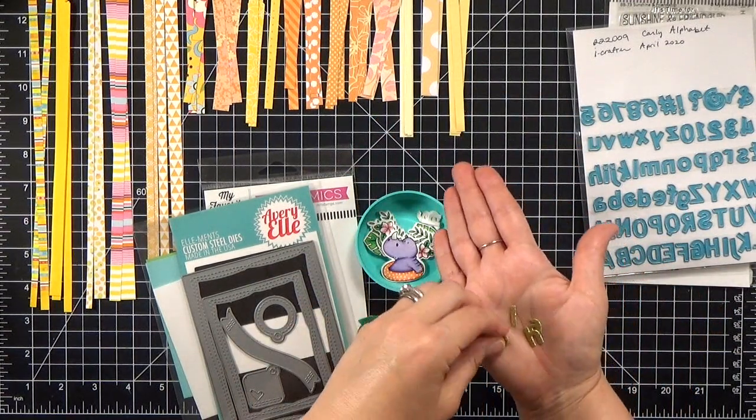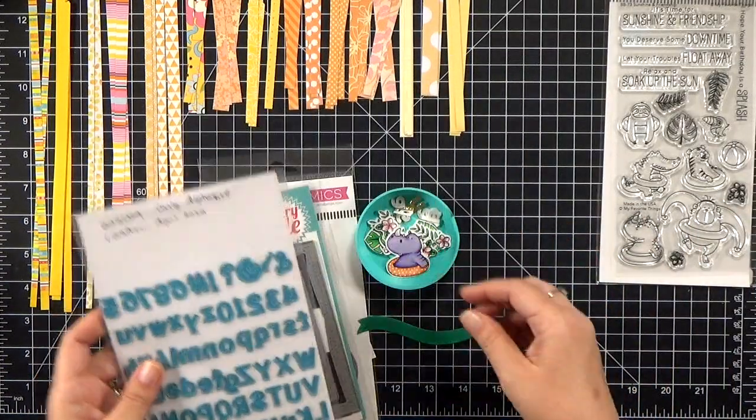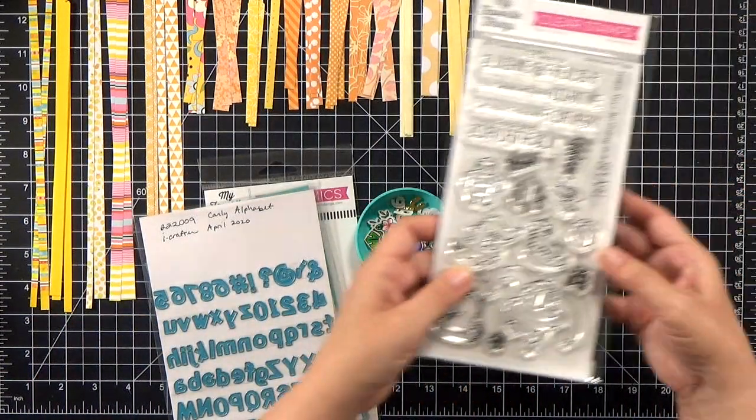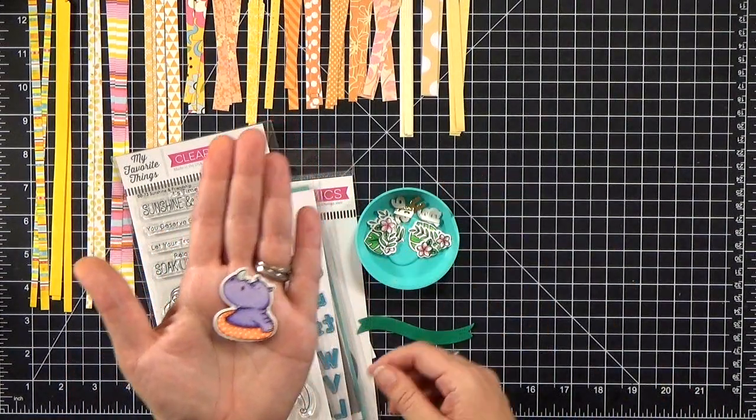I also, for the rest of my sentiment, I'm going to say Splash. I spelled that out using the Carly alphabet from iCrafter. And then the images are all part of the Bertie Brown Sunshine and Friendship stamp set there.